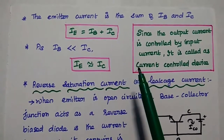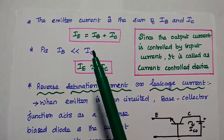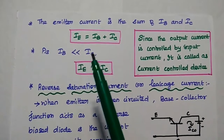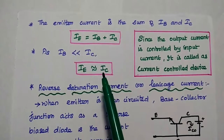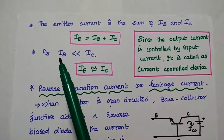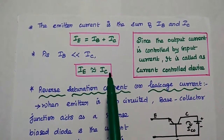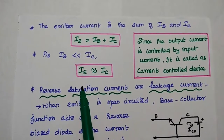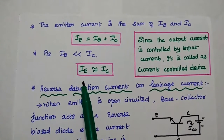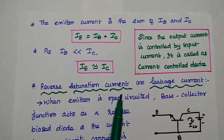Due to the reverse bias on the collector-base junction, most of the injected electrons from emitter cross over into the collector to produce a large collector current, which is the output current. According to Kirchhoff's current law, the emitter current is equal to the sum of base current and collector current. As the base current is far less than collector current, the emitter current is approximately equal to the collector current. Since the output current is controlled by the input current, the BJT is called a current-controlled device.